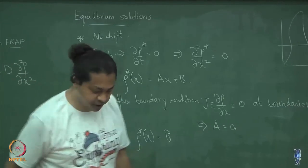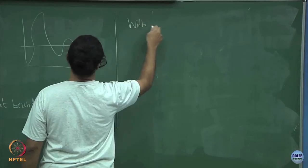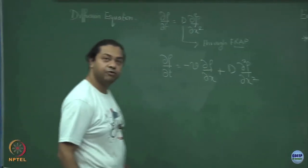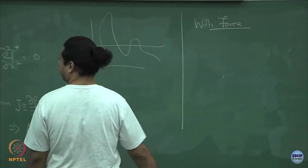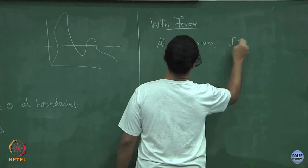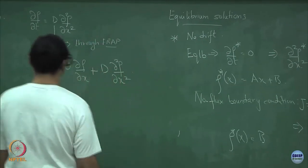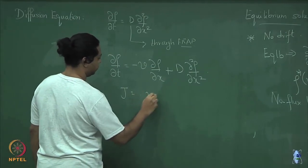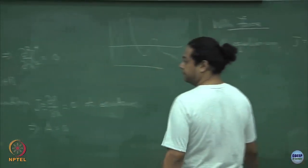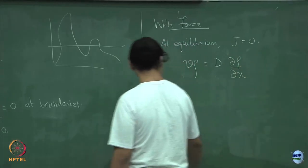That is the no-drift case. We can also do the case in the presence of forces or drift — the drift-diffusion equation. At equilibrium there will be no net current in the system, which means the current equals 0. Remember the current is v·rho minus D·del rho del x. If the current equals 0, what I need to solve is v·rho equals D·del rho del x.